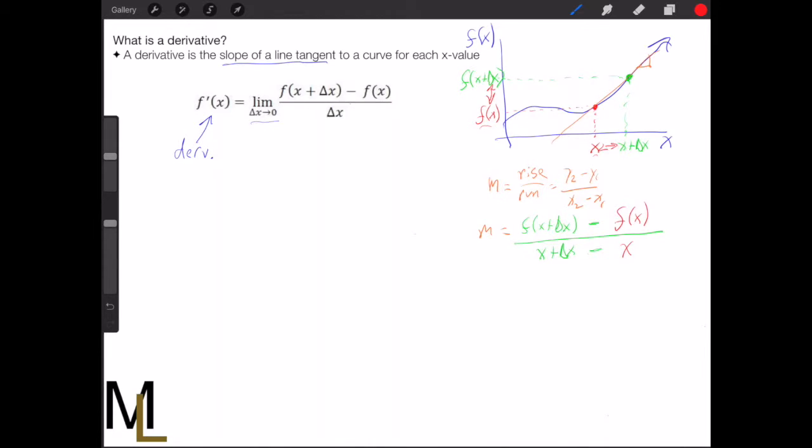But what calculus asks you to do is it's always looking for a tangent curve tangent to the curve, so that's only at one point. So in order to get just one point, what we need to do is we should shrink the x plus delta x closer to x.